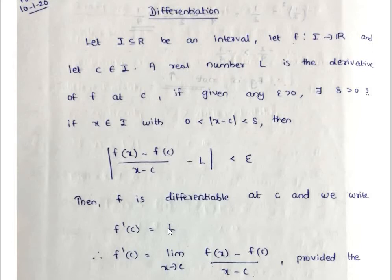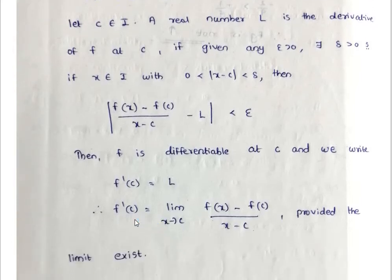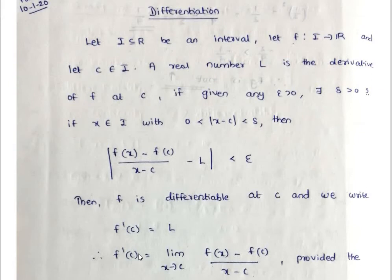That is, f'(c) is equal to the limit as x tends to c of f(x) minus f(c) divided by x minus c, provided the limit exists. So we write f(x) minus f(c) divided by x minus c.